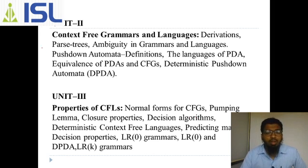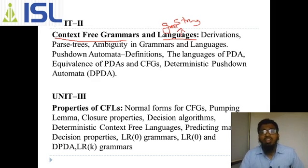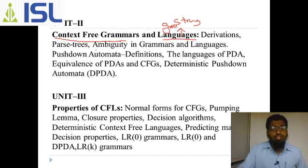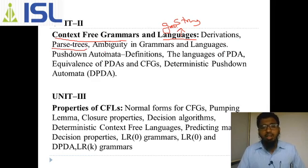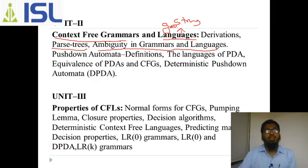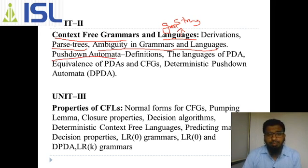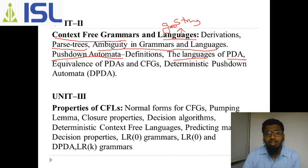Now moving to unit two: context-free grammar and language. As mentioned, language is nothing but a group of strings. We will see derivations, parse trees, and ambiguity in grammars and languages — what kind of ambiguity we get in grammar and language. We will also see pushdown automata — the definition of pushdown automata and the language of PDA.